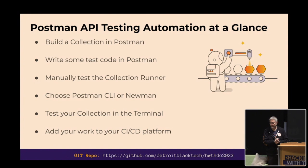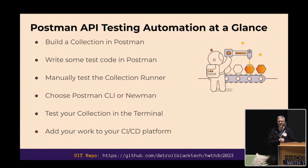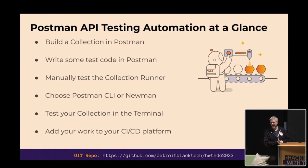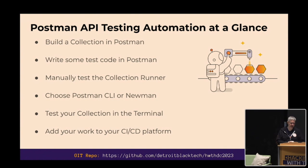We have a couple of command line tools. We have a newer one released last fall with version 10 of the Postman product called the Postman CLI. The older one is a community-developed command line interface called Newman — named after the Seinfeld character, since Newman is the postal carrier in the show. We're going to look at how to run your collection tests in both Newman and the Postman CLI, then look at how to automate that in a CI/CD platform.